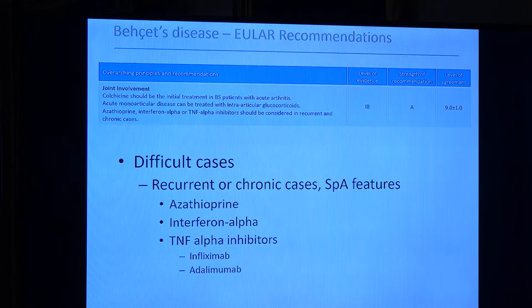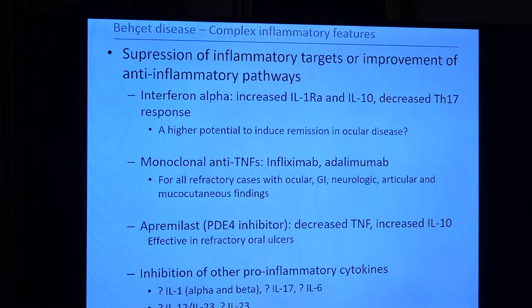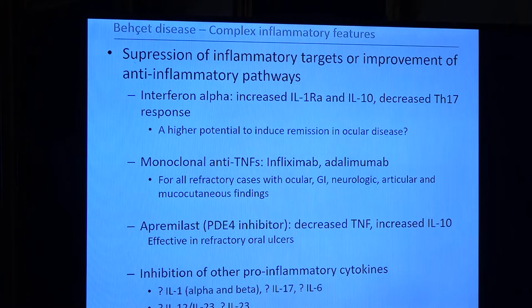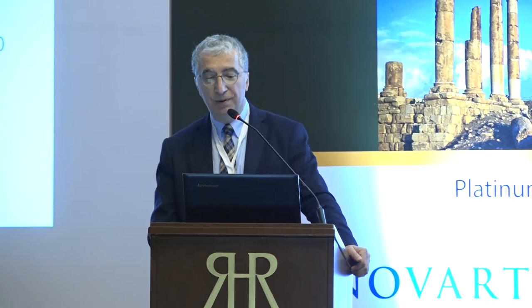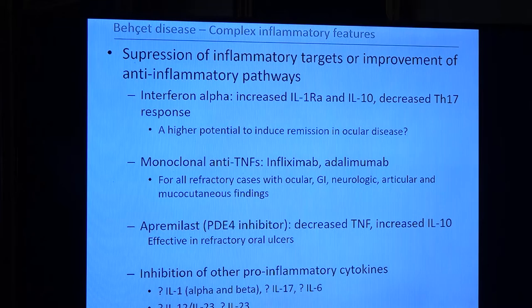For arthritis, we can try colchicine, azathioprine, NSAIDs, when necessary anti-TNFs, or even interferon alpha, but usually arthritis is not a critical issue. When we look at all these manifestations and the treatment paradigm, we have evidence showing involvement of decreased IL-10, higher TNF, IL-17, and IL-1. Interferon alpha is associated with increased IL-1 receptor antagonists and decreased IL-10 and IL-17, and has a remission potential higher than anti-TNFs. Monoclonal anti-TNFs are effective in almost all disease manifestations. Apremilast, a phosphodiesterase 4 inhibitor, is associated with decreased TNF and increased IL-10, and has a good response in mucocutaneous manifestations. For refractory cases, IL-1, IL-12, and IL-23 are still potential targets.